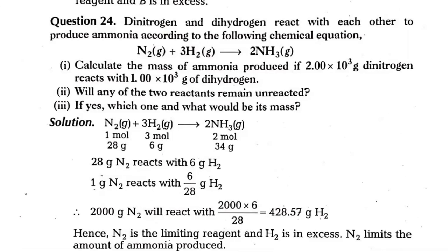Hello friends, now we are going to discuss some basic concepts of chemistry question number 24 in which we have an equation given. Nitrogen and hydrogen react together to get ammonia, and you must be knowing that this reaction is called the Haber process, ammonia manufacturing.